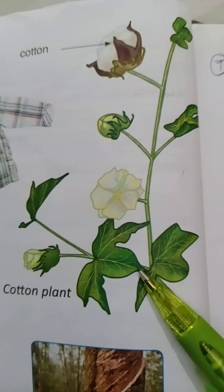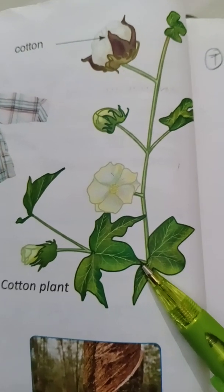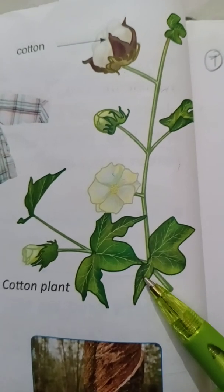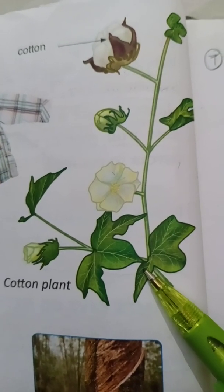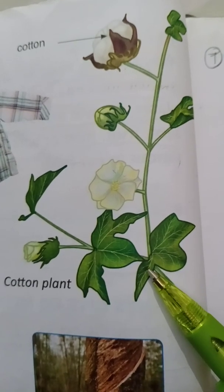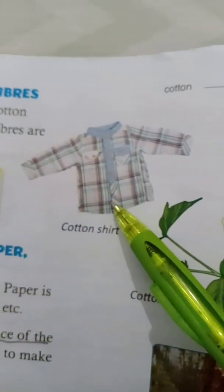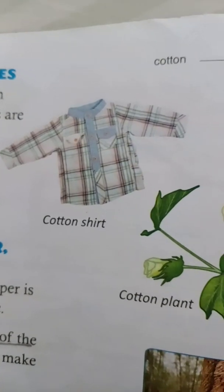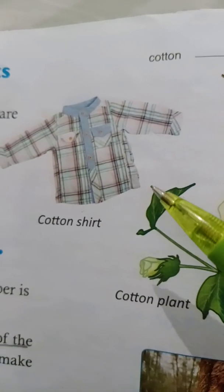Plants give us fibres. We get fibres such as cotton and jute from plants. Fibres are used to make cloth. What is fibre? Fibre is a thin thread-like material.